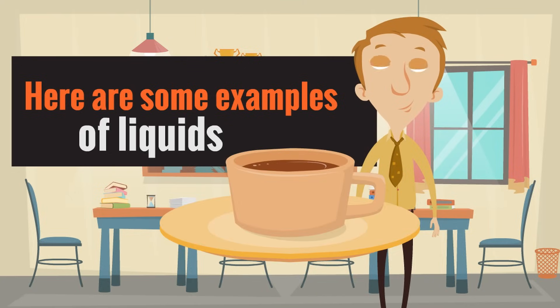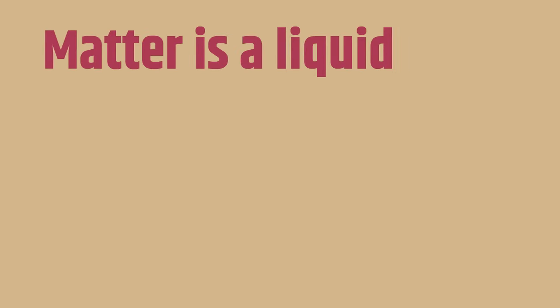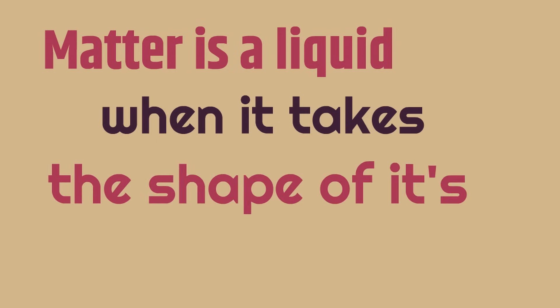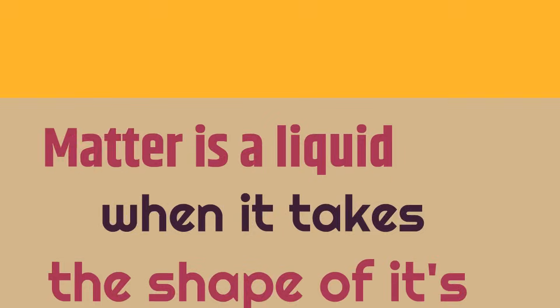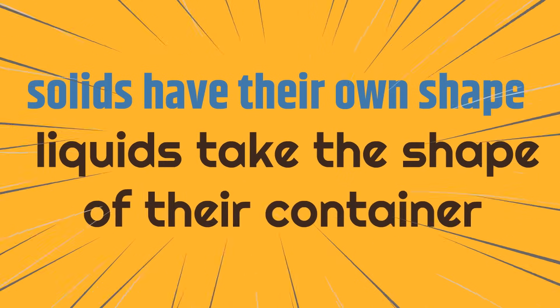Here's the last example of a liquid: it's coffee and it's in this cup. It's taking the shape of the cup because it's a liquid — it doesn't have a shape. Matter is a liquid when it takes the shape of its container. So, solids have their own shape and liquids take the shape of their container.